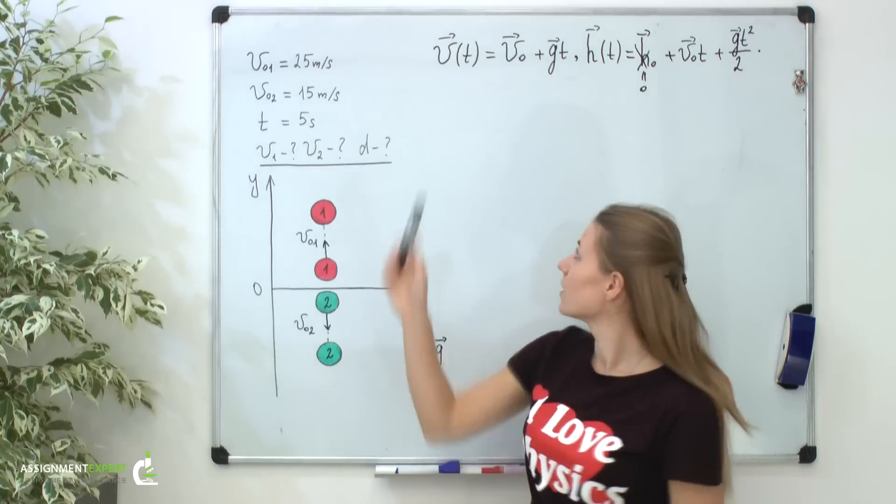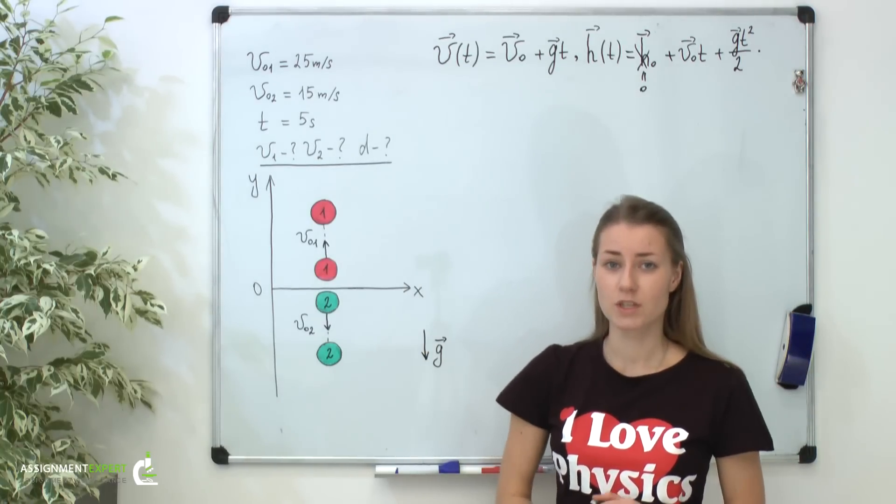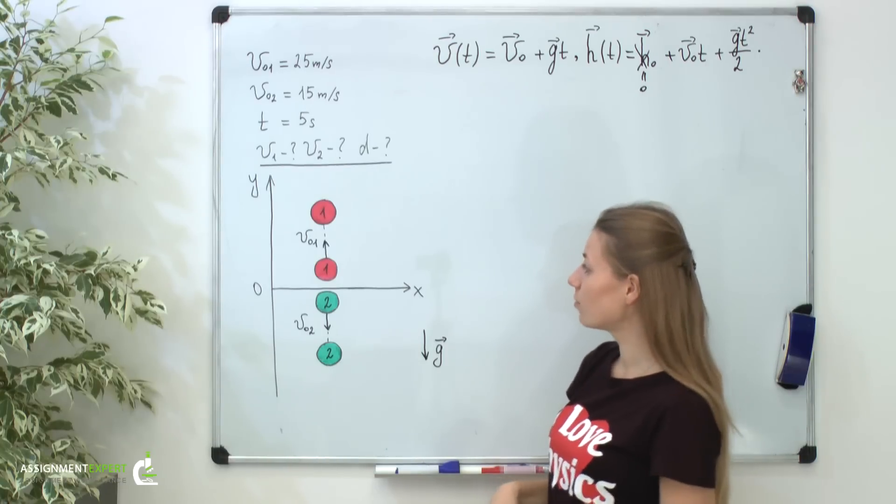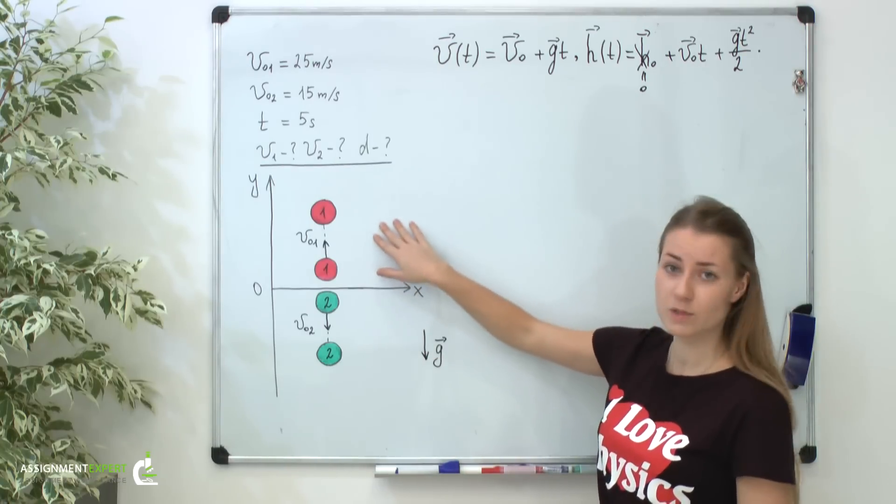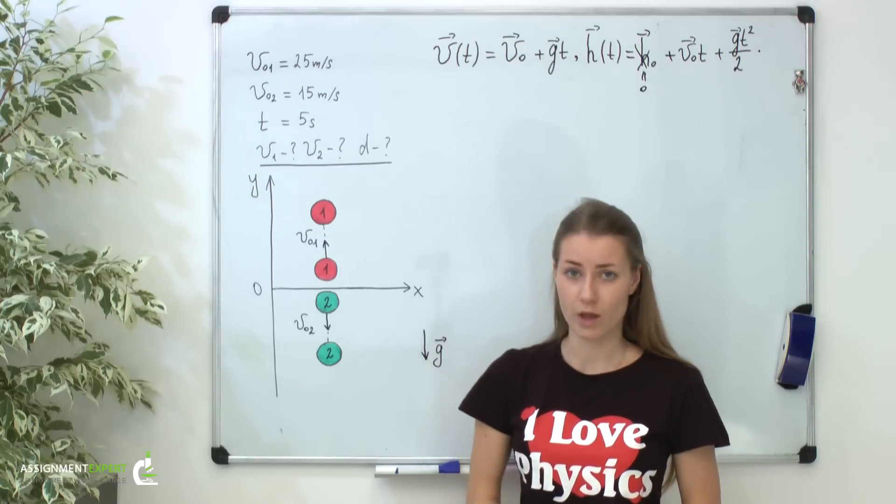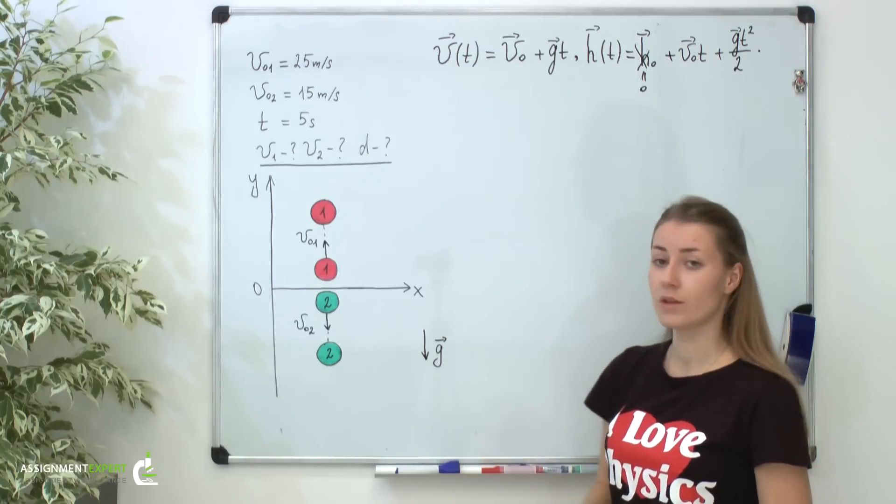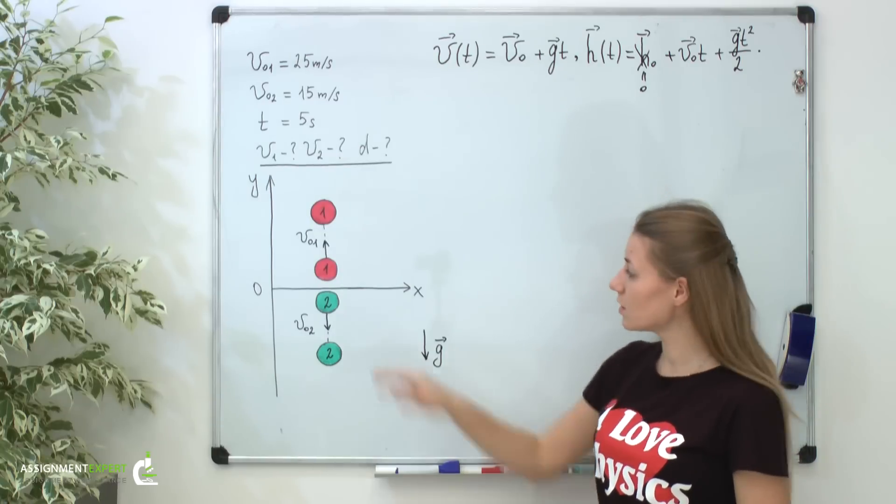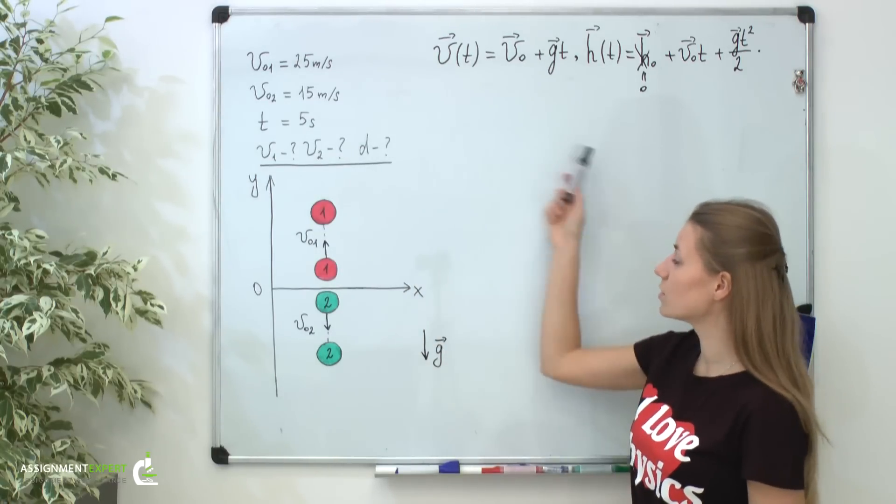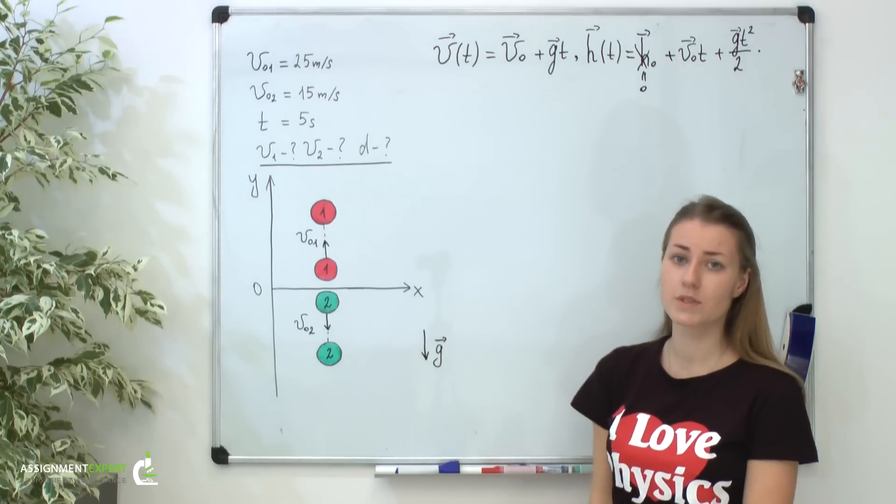As you can see, these equations are in vector form. So in general, we have to consider them component-wise. But in fact, we see that our balls move along only one special direction, up and down along the axis which we have marked as y. Therefore, our equation has only one non-zero component. It's a y-component. To find this component, we have to project both equations on the y-axis. And after that, our problem becomes one-dimensional.